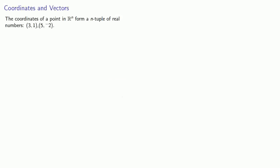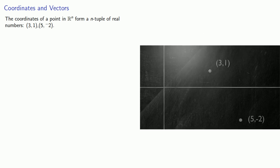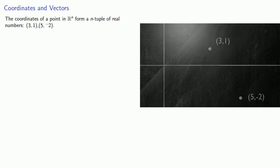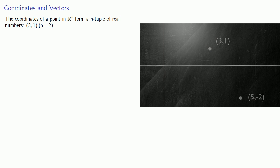For example, the coordinates of a point in Rn form an n-tuple of real numbers — for example, the coordinates of a given point. Similarly, we can talk about a vector in Rn, such as specific vectors given by their components.